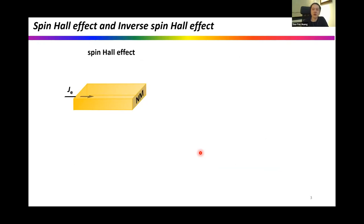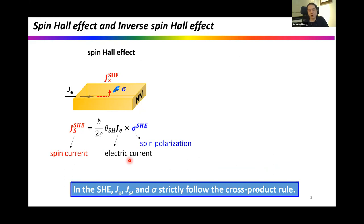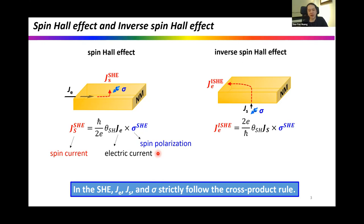Regarding the recent emerging field of spin current phenomena, we know that spin Hall effect plays a central role. A charge current in a normal metal with strong spin-orbit coupling can be converted to a transverse spin current by the spin Hall effect. The directions of the spin current, charge current, and spin index are orthogonal to each other. However, this pure spin current cannot be detected by electrical means. Conversely, if a pure spin current injects into a metal, it converts to a charge current and can be electrically detected — this is the inverse spin Hall effect, which is widely used to detect pure spin current and determine the spin Hall angle.